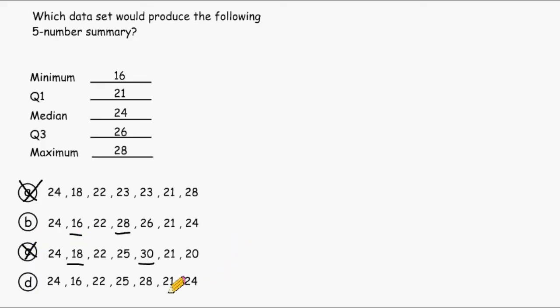And for data set D, 16 is the minimum and 28 is the maximum. So we already know that choice B or choice D must be the answer. So let's dig a little bit deeper.